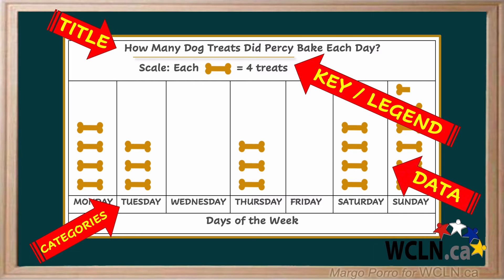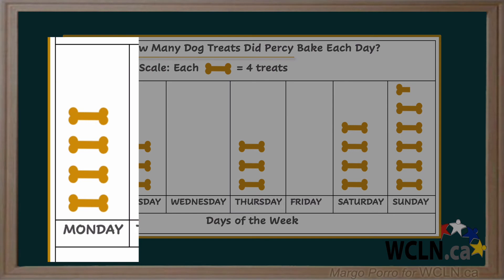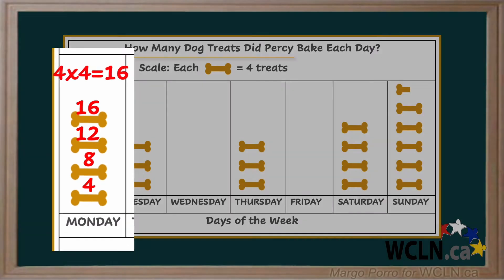How do we read the data? We count by the number given on the scale. To count how many treats were eaten on Monday, we can count by fours, because each dog bone treat counts as four. So we can see that 16 treats were baked on Monday. Or we can multiply the number of dog bone symbols, four, by the value of each bone, four, and we'll get the same number: 16.